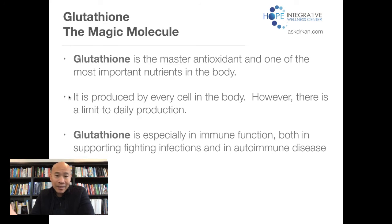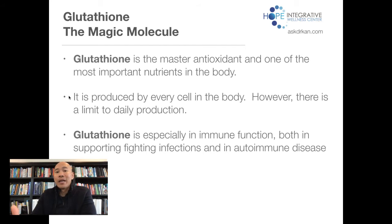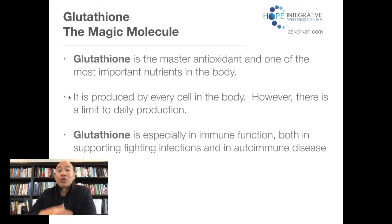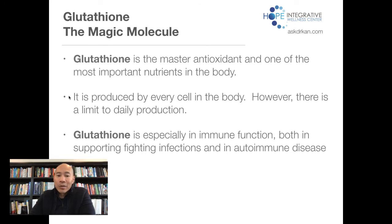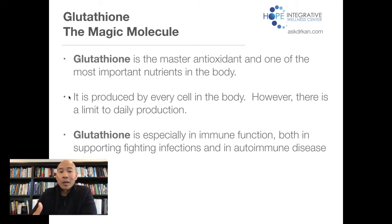There are antioxidants you eat from food, like vitamin C and selenium, but there's also antioxidant your body naturally produces because it's so important. Glutathione is that antioxidant your body naturally produces. Glutathione is especially important in immune function — both in fighting infection, but also in people with autoimmune disease in establishing immune tolerance, so your immune system doesn't attack itself.